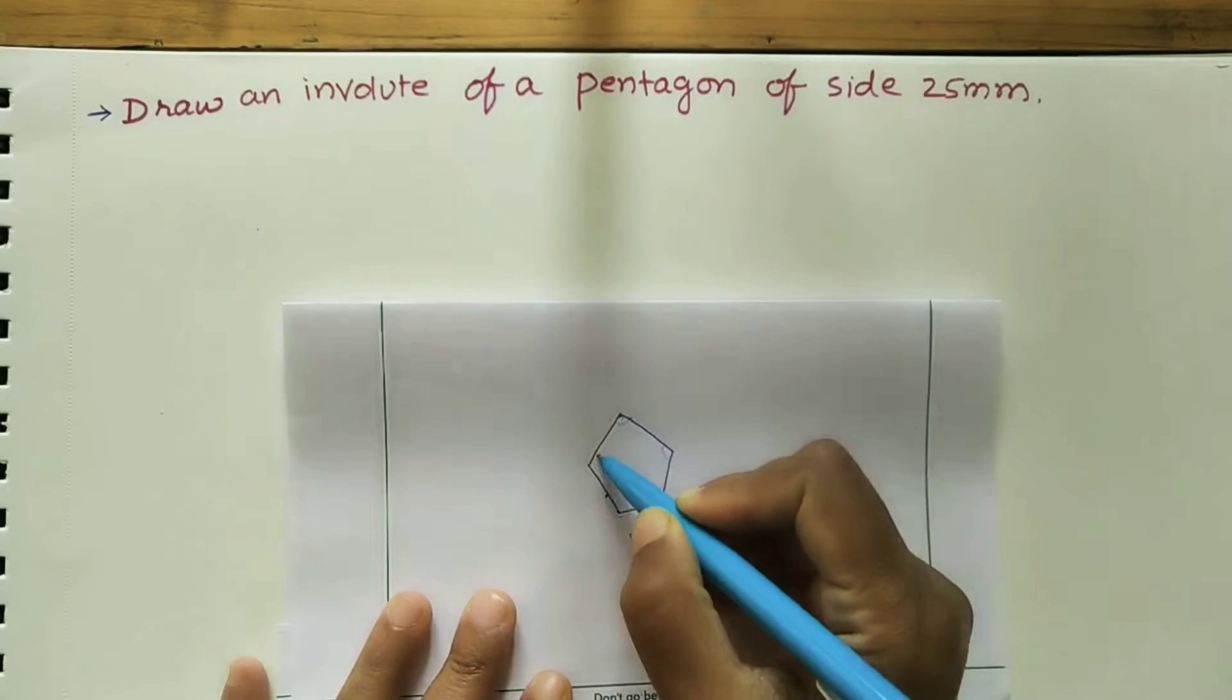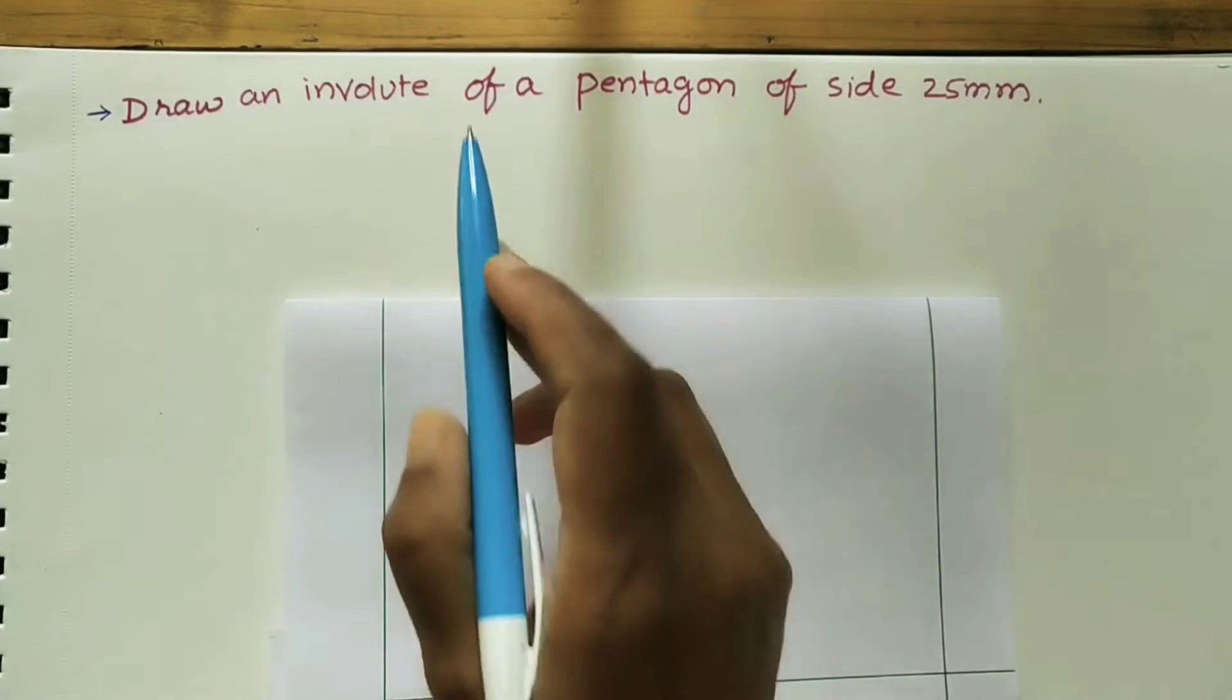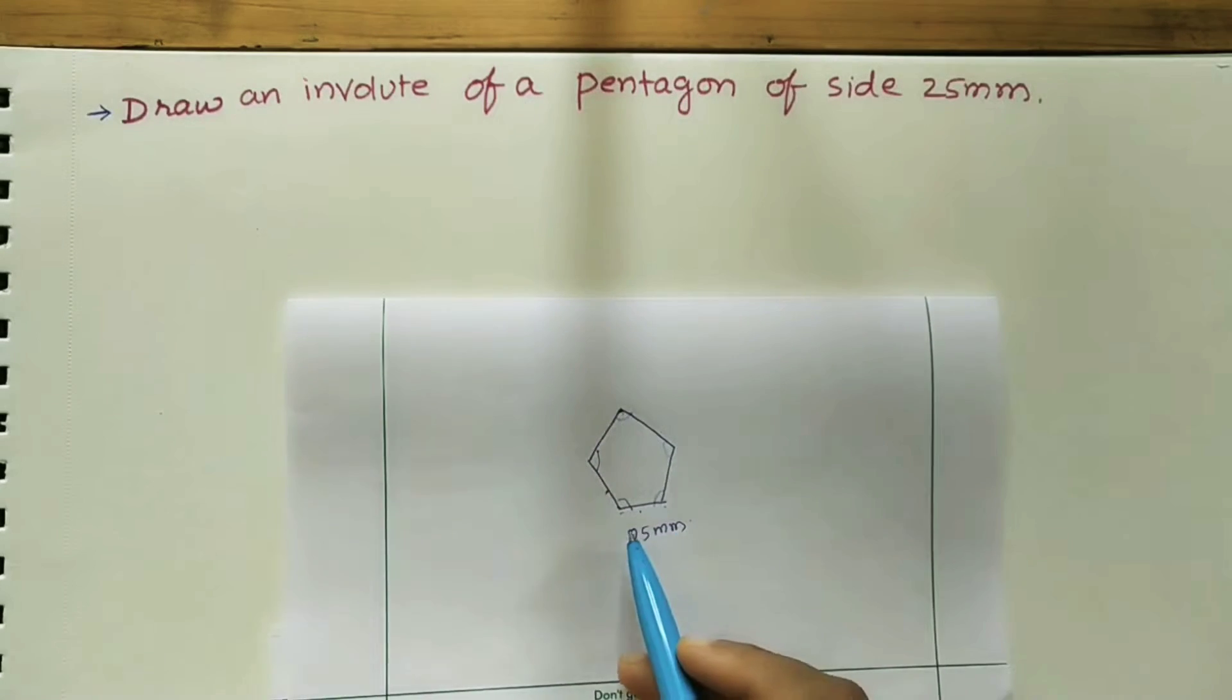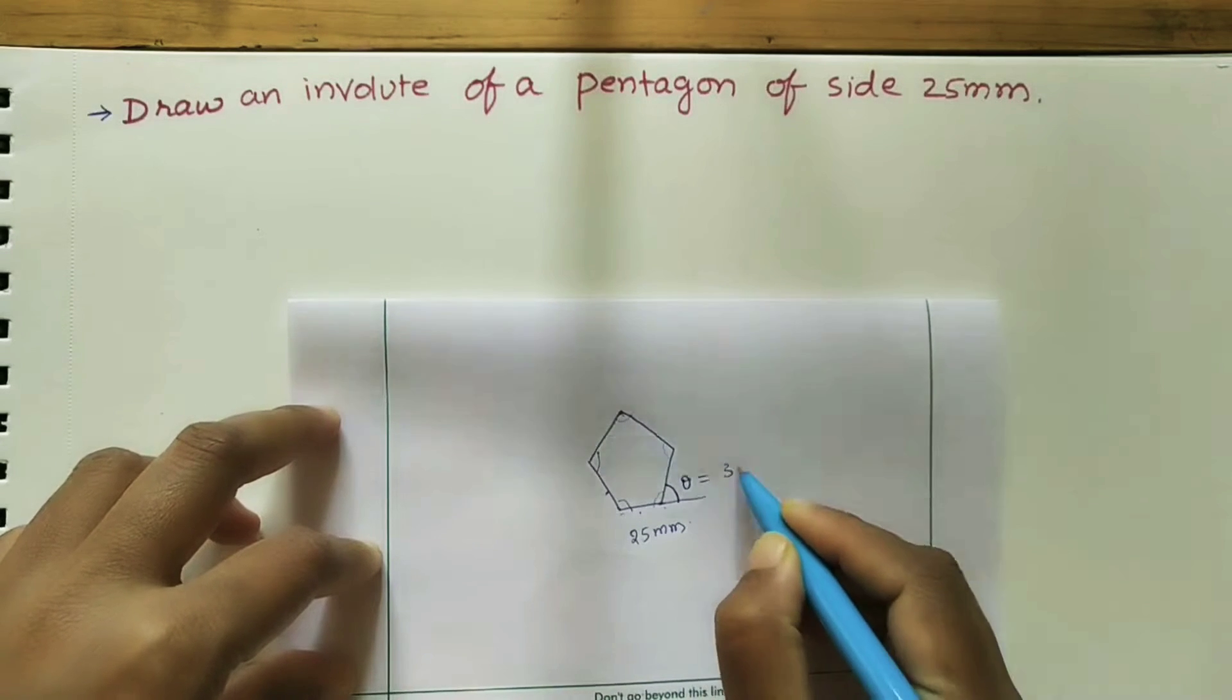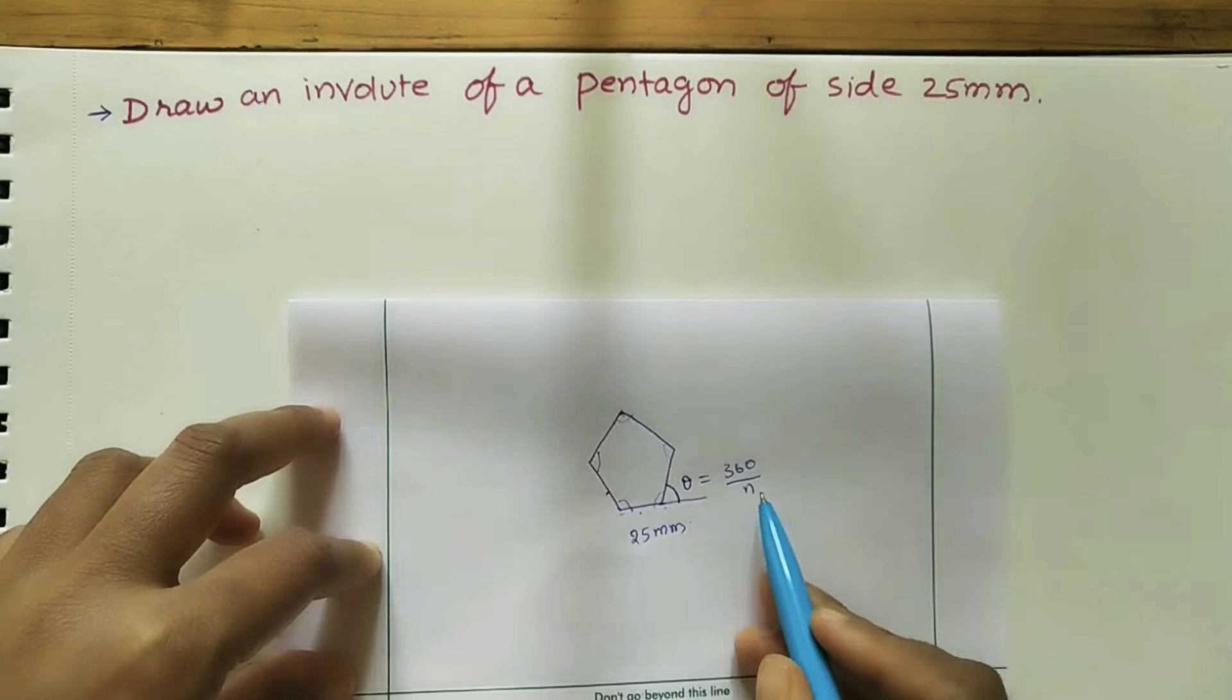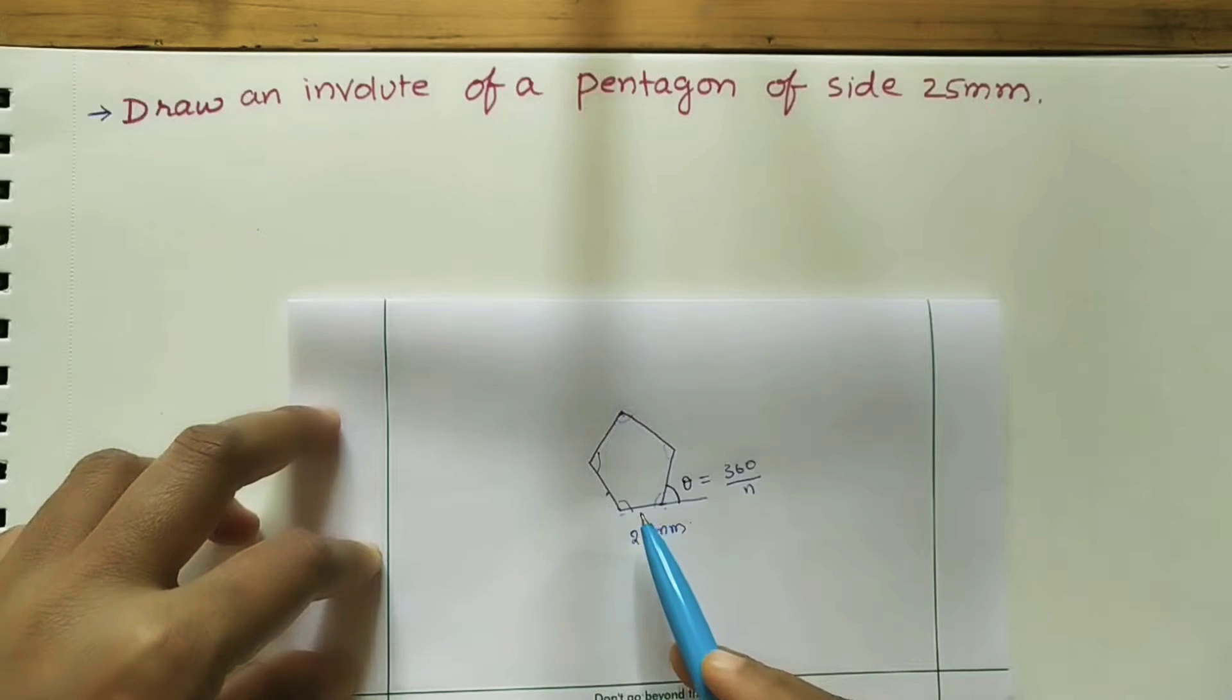The angle at all corners is also the same for a regular pentagon. For doing the involute, we need to draw the pentagon first. We have one outer angle formula: theta equals 360 by n, where n is the number of sides of the polygon. Here we are taking a pentagon, it has five sides, so n equals 5. 360 by 5 equals 72 degrees.